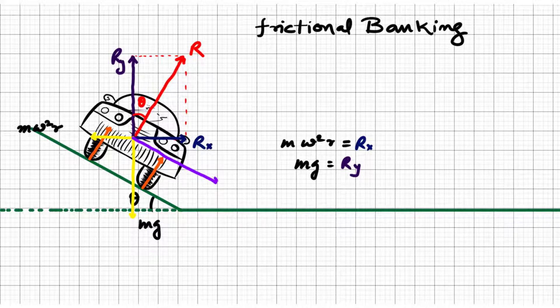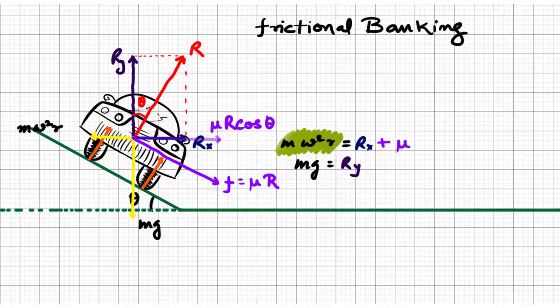Here we need to note the way friction is pointing. For maximum allowable speed, friction points downwards on the inclined plane. So here we have a component of normal reaction and a component of friction to work as centripetal force.